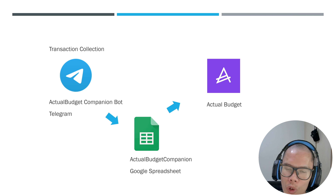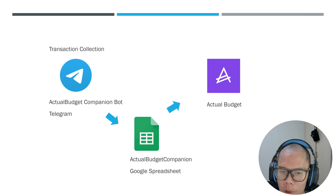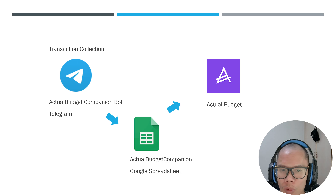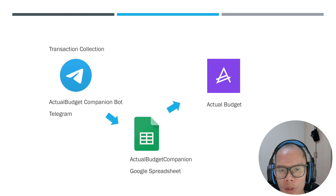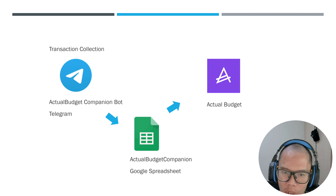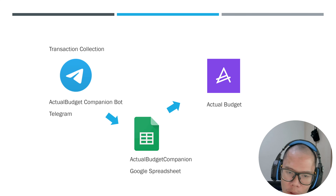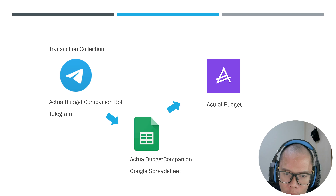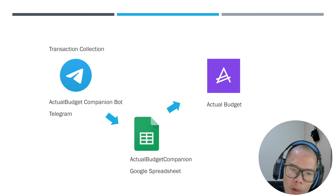When people consider which application to use, they always ask: is there a mobile application? For me it was a bit different, because when I started budgeting there was no mobile application. I started off with Quicken on a Windows PC. What I normally did was, the first thing when I got home, before doing anything else, I'd start up my computer and enter the transactions from the day itself. It became a habit, and I think it's doable, but a lot of people struggle with that.